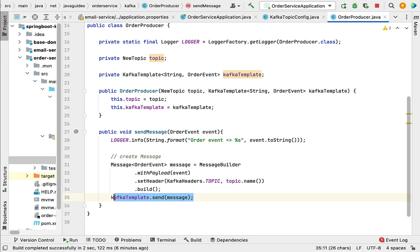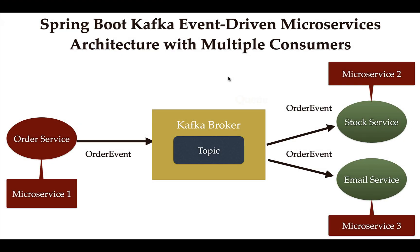Looking at the architecture, so far we have created the OrderProducer in the order service and it is sending events or messages to the Kafka topic. In the next couple of lectures we'll see how to create consumers in the stock service and email service, and how these consumers will subscribe to and consume events from the Kafka topic.